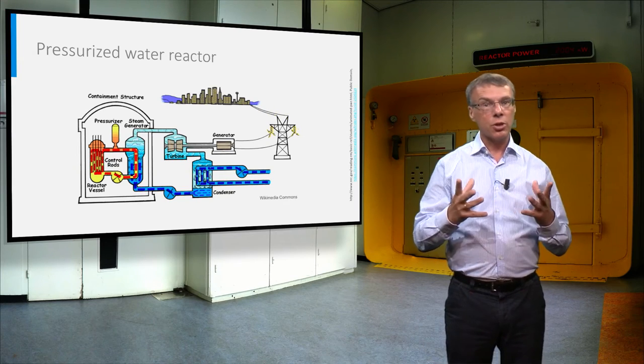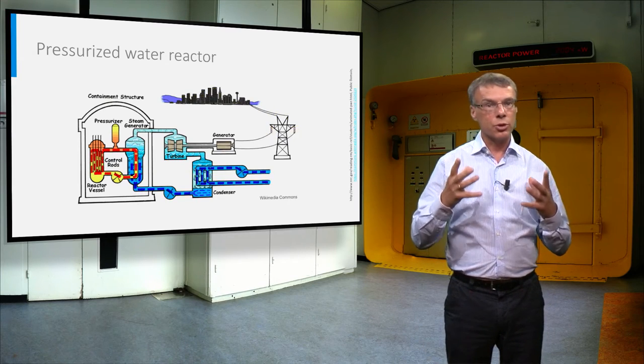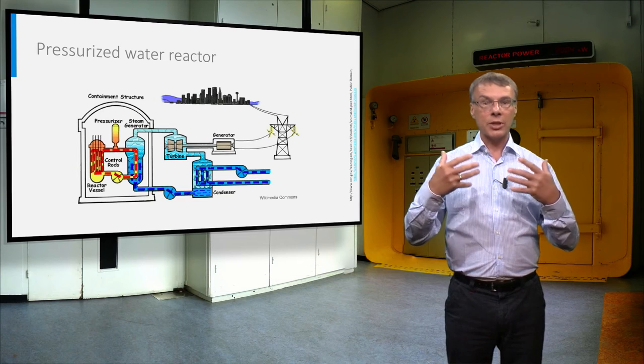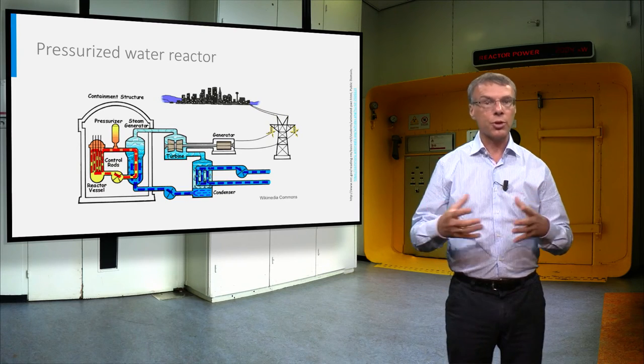On top of the reactor vessel you see the control rods, which contain neutron-absorbing materials and can be inserted in the reactor core to control the reactor power.